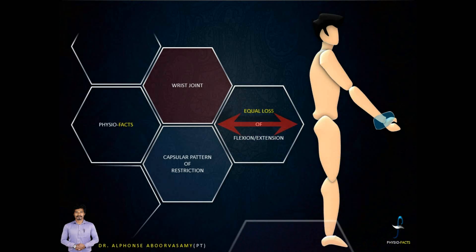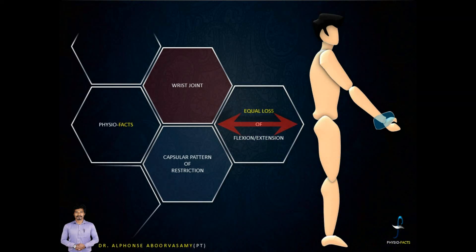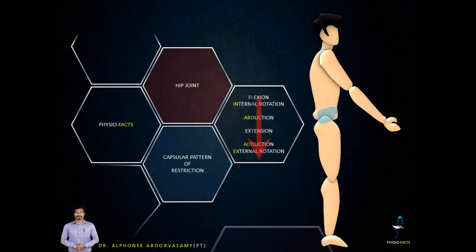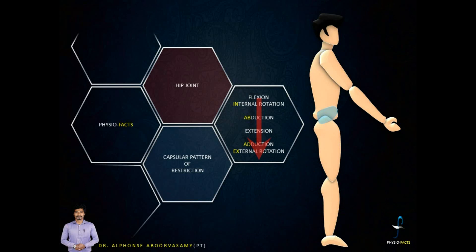For the wrist joint, it affects both flexion and extension equally — we call it equal loss of flexion and extension when the capsule of the wrist joint is involved — and it may affect radial and ulnar deviation to a lesser extent. For the hip, flexion and internal rotation are the most affected, abduction is moderately affected, extension is less affected, and adduction and external rotation may not be affected or show only little restriction.